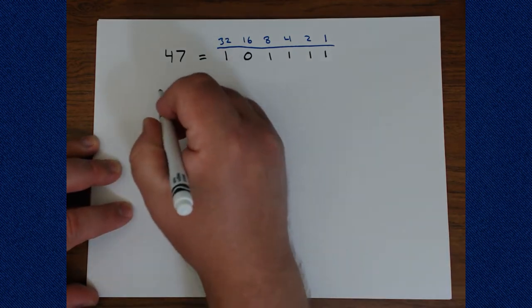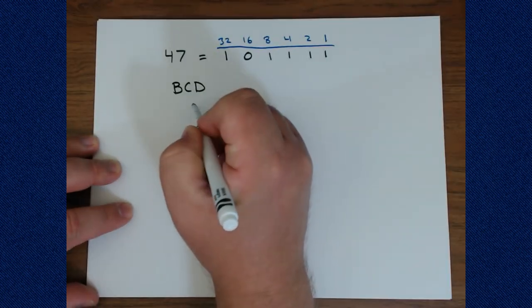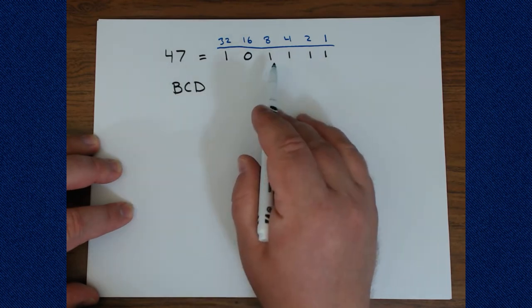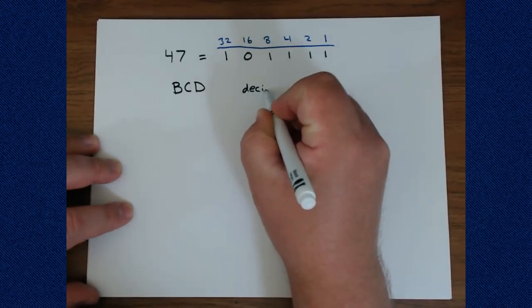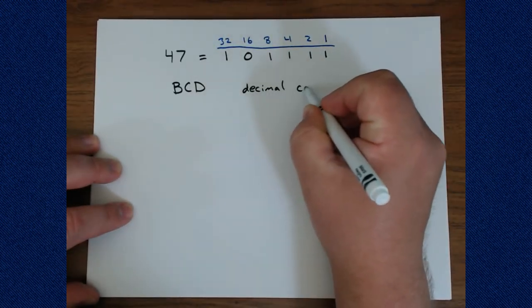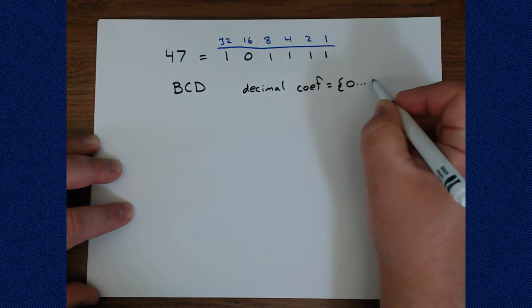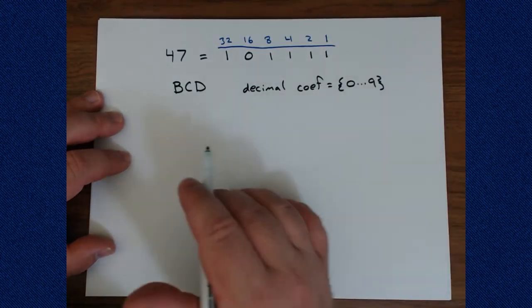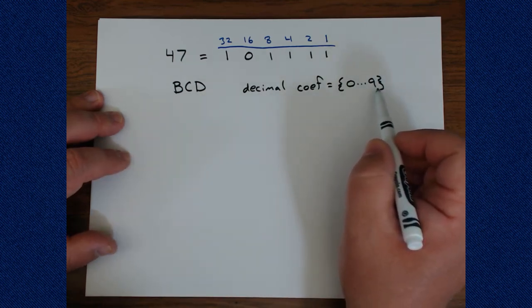This is something called binary coded decimal, which we usually shorthand BCD. And binary coded decimal recognizes the fact that humans can very quickly understand single digits when represented in binary, single decimal digits, because the only decimal digits we have, right, so decimal coefficients are really in that range from 0 all the way to 9. No big deal at all. Very few values.